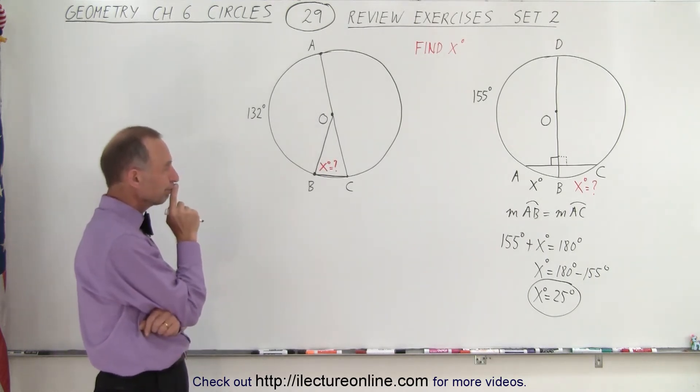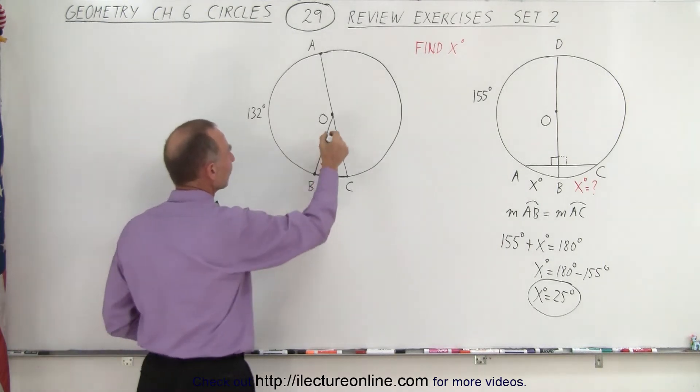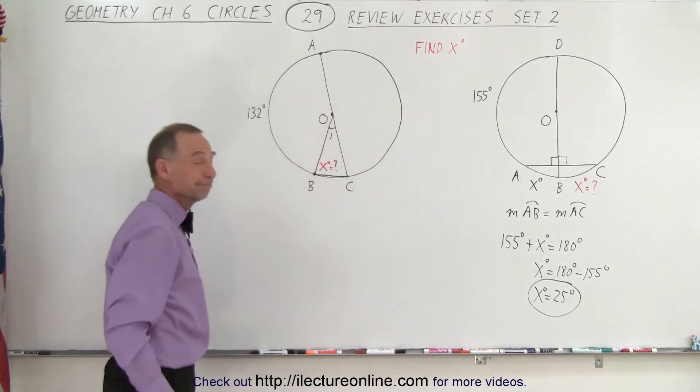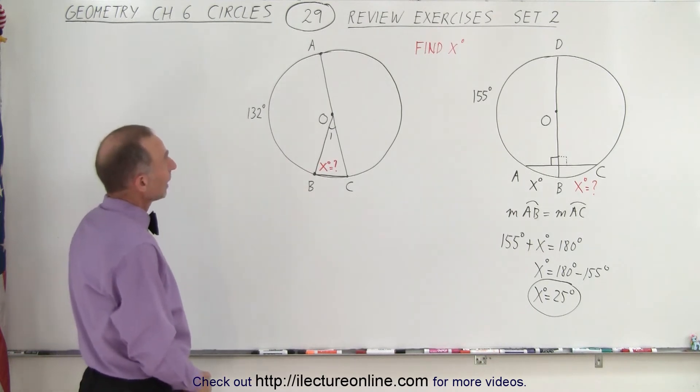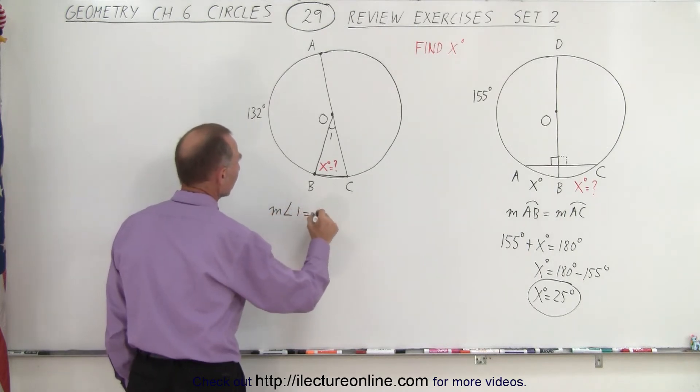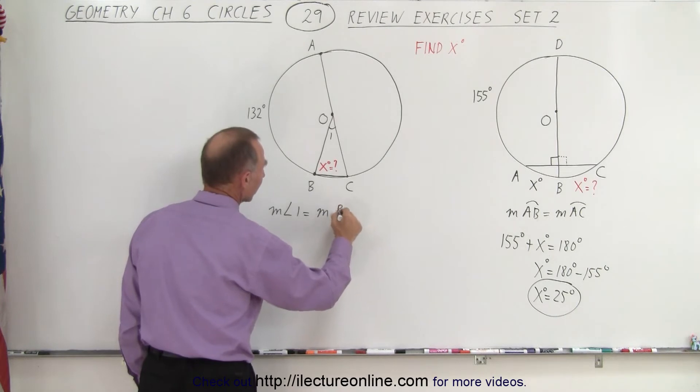On this example, it's a little bit more challenging. But what we can do is we can find this angle right here. So let's call this angle one. And how do we find the value for angle one? Well, we can say that the measure of angle one must equal to the measure of arc length from B to C.